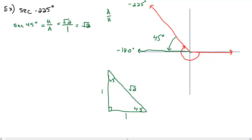So if we simplify this, the secant of 45 degrees is going to be the square root of two. We can plug that value back in — secant of negative 225 degrees is the square root of two — but we have to check whether the sign is correct.